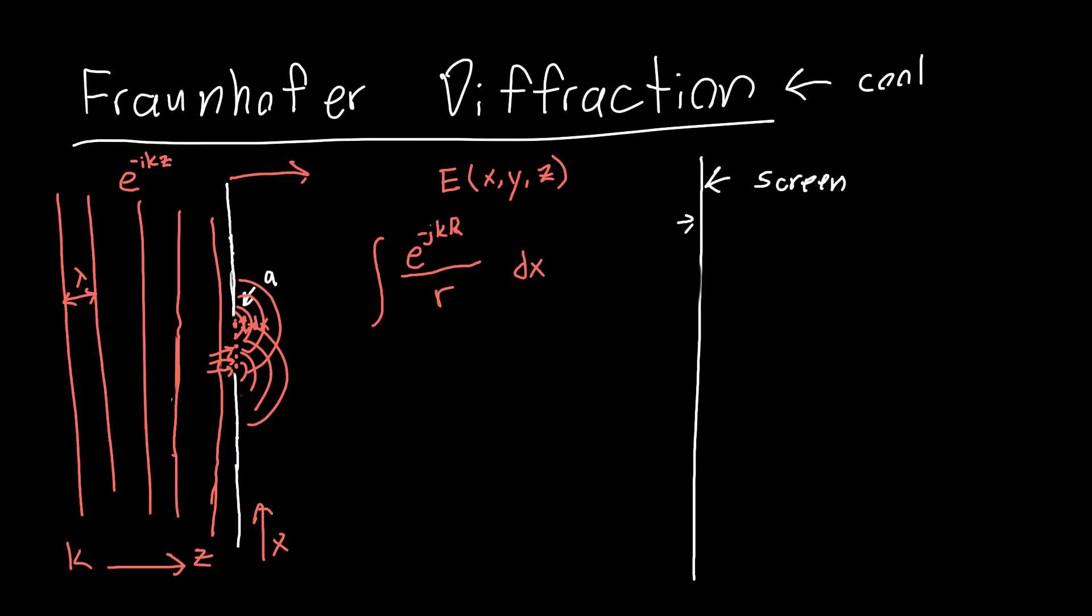So we're integrating this e to the minus jkr over r pattern. And actually, let's make these r's the same r, because they're both the radial distance away from each one of those point sources. And in this case, we're integrating it from, let's say that x equals zero is here, and x equals a is here. So we're integrating this from zero to a. And so now all we really have to do is set up our coordinates properly. So we understand conceptually that each, each tiny piece of this slit is emanating spherical waves. Now we need to just properly set up the integral.